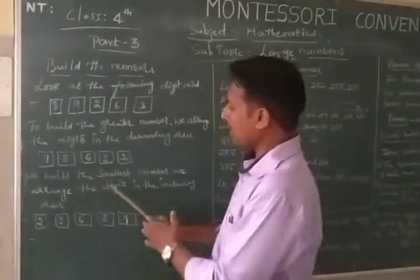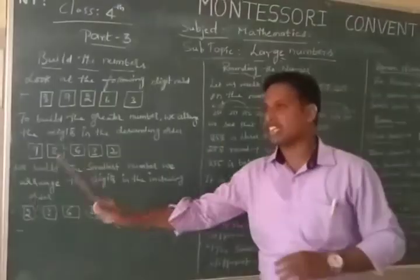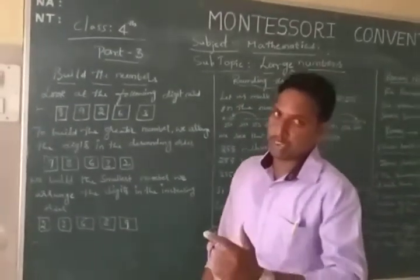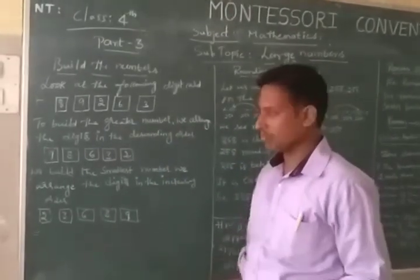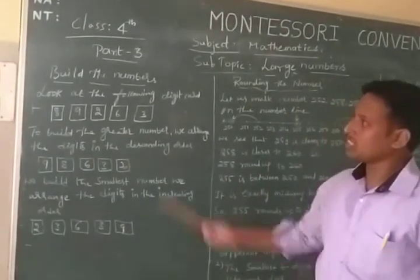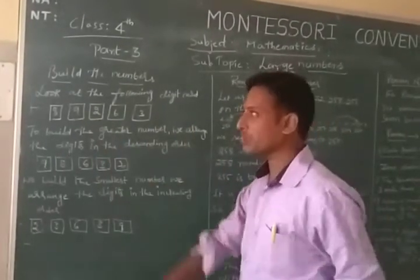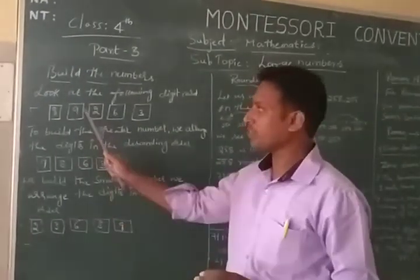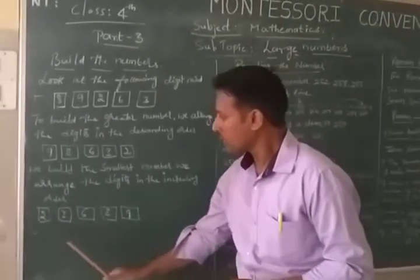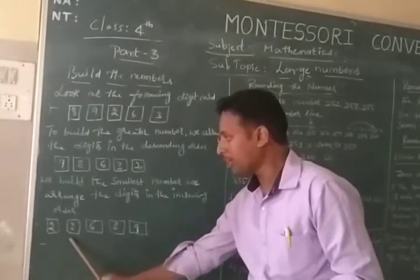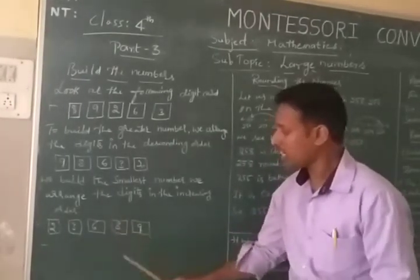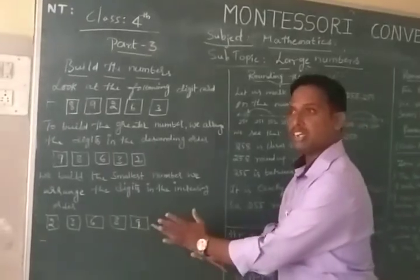Now we build the smallest number. We arrange the digits in the increasing order. What is increasing order? The smallest number to the greatest number. The smallest number in these digit cards is 2, then 3, then 6, then 8. The greatest number is 9, which is last and greatest.